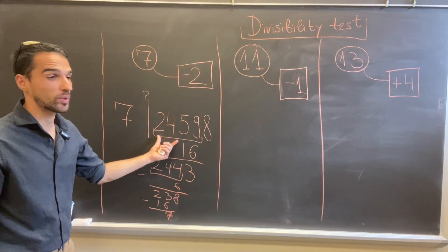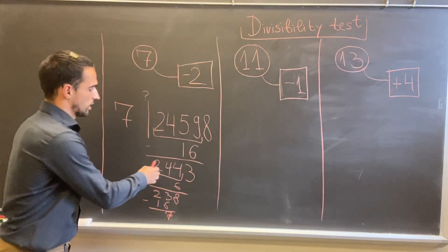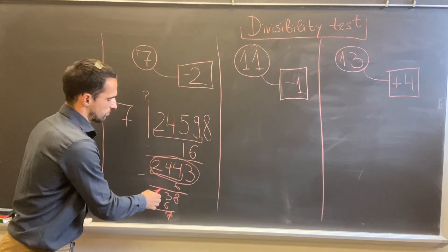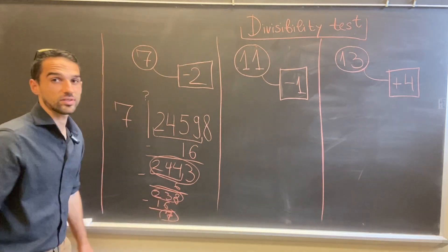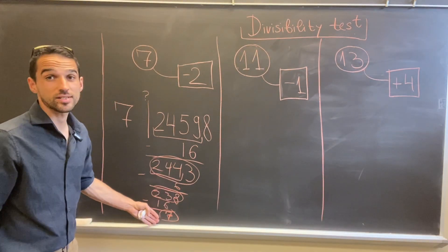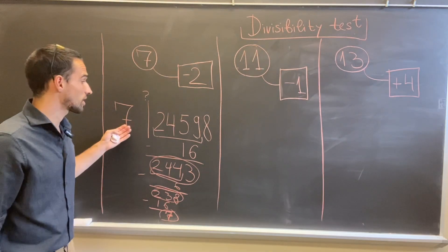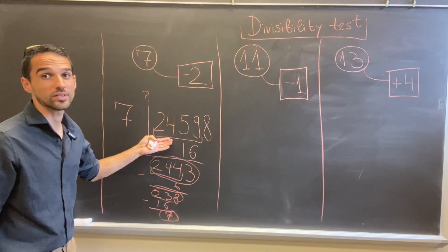So the rule is that this number is divisible by 7 if and only if each of these numbers we got on the road, including 7, is divisible by 7. So apparently 7 is divisible by 7, and then this number at the top is also divisible by 7.